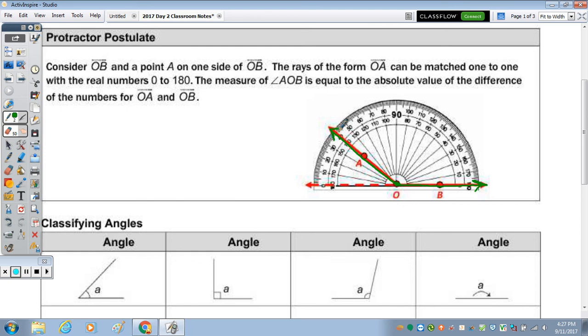And then we're going to look at ray OA, which those two rays are not opposite because they don't form a straight line. So if we look at that angle and we want to find the measure of angle AOB, so this angle right here.